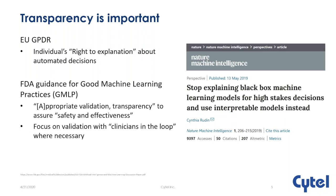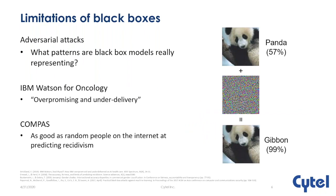There's some research in explainability of machine learning models — where you build a black box model and put a simplification on top to try and explain what the model is doing. This is different from transparent or interpretable machine learning, where you build models to be transparent from the ground up. A paper in Nature by Cynthia Rudin, a machine learning researcher, urges people to stop explaining black boxes with simplifications and to use interpretable models instead. The reason is that there have been found, especially recently, some significant limitations of black boxes when deployed in the wild.